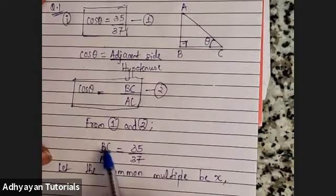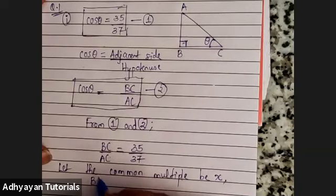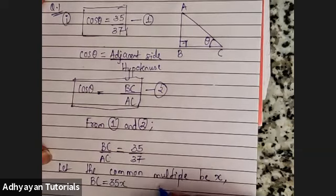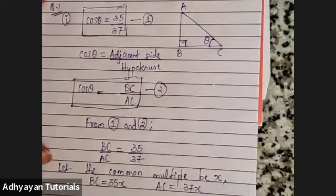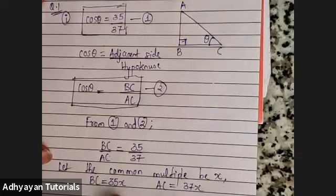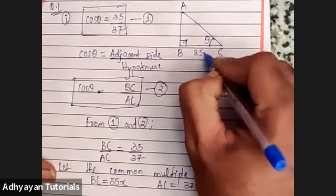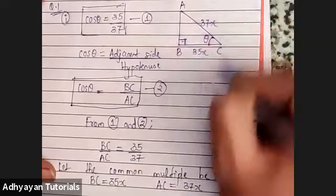So BC has to be 35x and AC has to be 37x. I hope that is clear. I'll just mark those values in the figure: BC = 35x, AC = 37x.